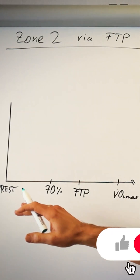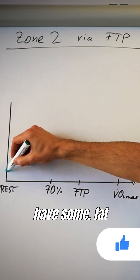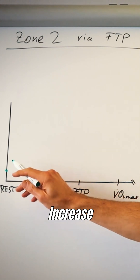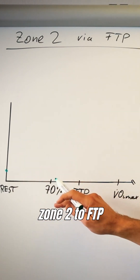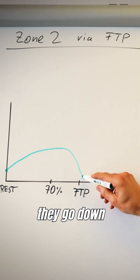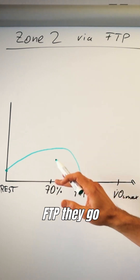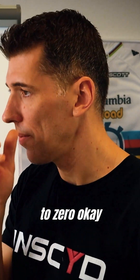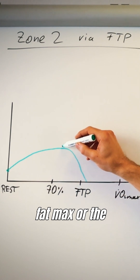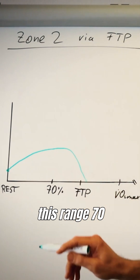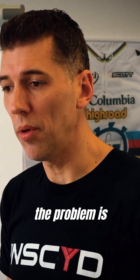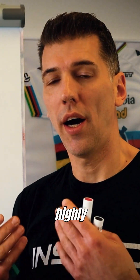Let me give you two examples. At rest, you have some fat combustion. When you increase intensity from rest up through zone 2 to FTP, fat combustion rates first go up and then they go down, and somewhere near FTP they go basically to zero. Therefore, you could argue that your fat max — the maximum fat combustion rate — would be somewhere in the range of 70 to 80 percent of your FTP value.